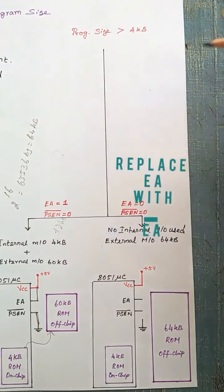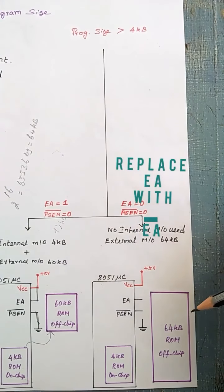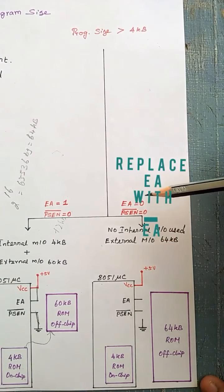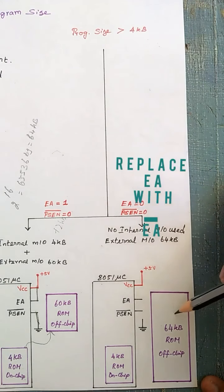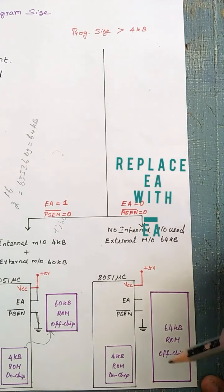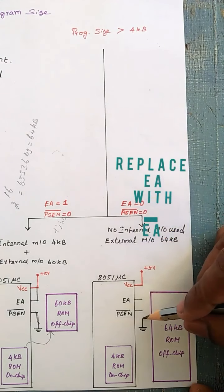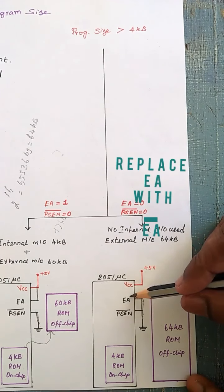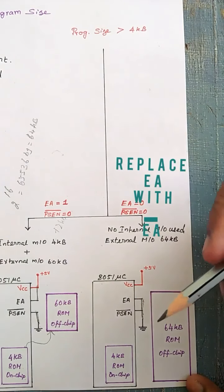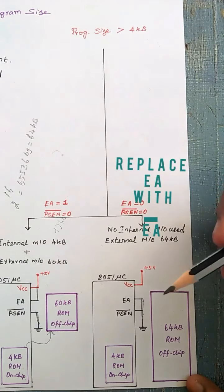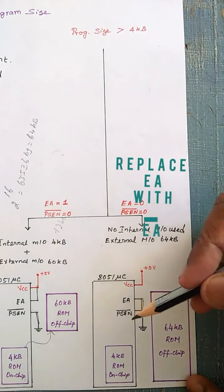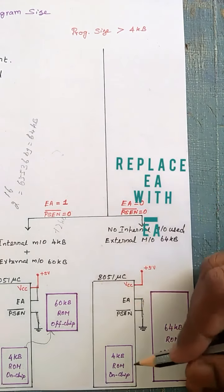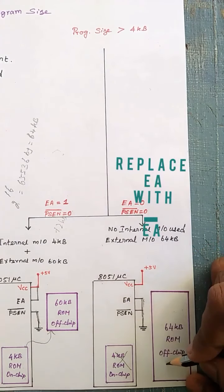The second option is to not use the internal memory at all and completely use the external memory instead. In this case, we make EA pin equal to 0 (grounded) and PSEN bar also equal to 0 (grounded), because the entire program is kept inside the external program memory. EA equal to 0 means internal memory is not used for program; PSEN bar equal to 0 means the entire program is in external memory, so there is no role for internal memory.